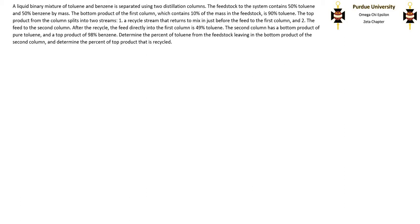After the recycle, the feed directly into the first column is 49% toluene. The second column has a bottom product of pure toluene and a top product of 98% benzene. Determine the percent of toluene in the feedstock leaving in the bottom product of the second column, and determine the percent of top product that is recycled.